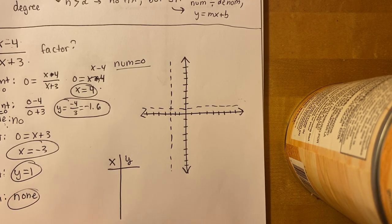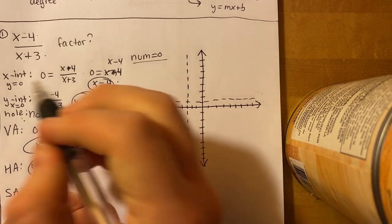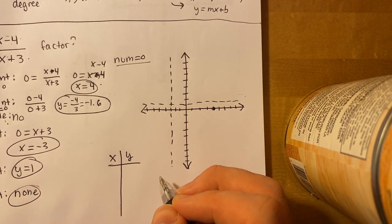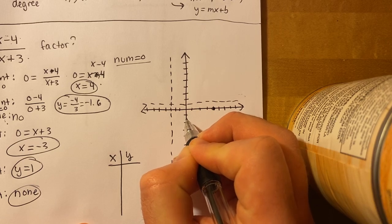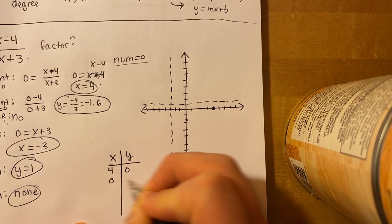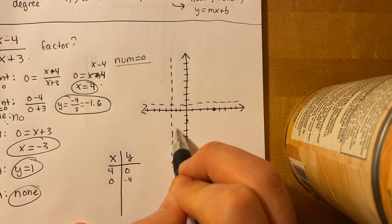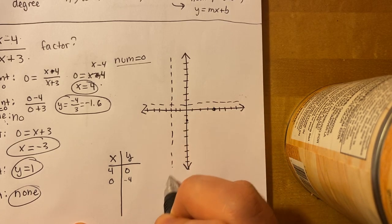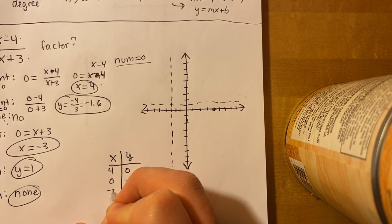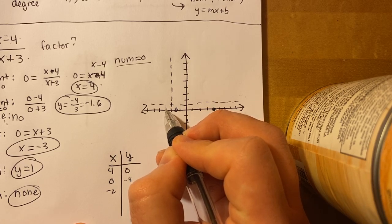Now we'll use an x-y table and plot some points. Our x-intercept is at 4 and our y-intercept is around negative 1.6. When choosing points, you want to pick values close to the asymptote to see the behavior. I'm going to check x = negative 2 — that's close to the vertical asymptote — and also check x = negative 4 and x = negative 5 on the other side of the asymptote.